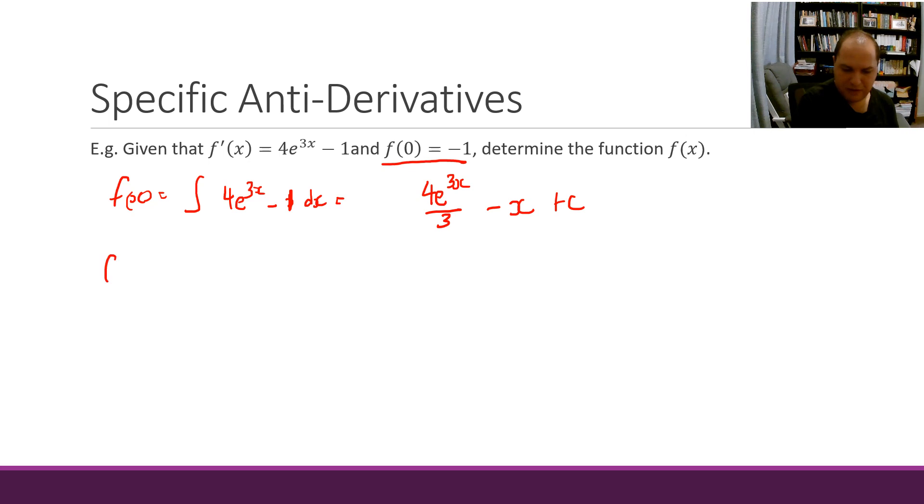And then I know that my function F of 0 equals negative 1, so let's substitute in F of 0. So negative 1 is my value of my function, substituting in x equals 0: 4e to the 0 divided by 3 minus 0 plus c. That's negative 1 equals 4 thirds minus 0 plus c.